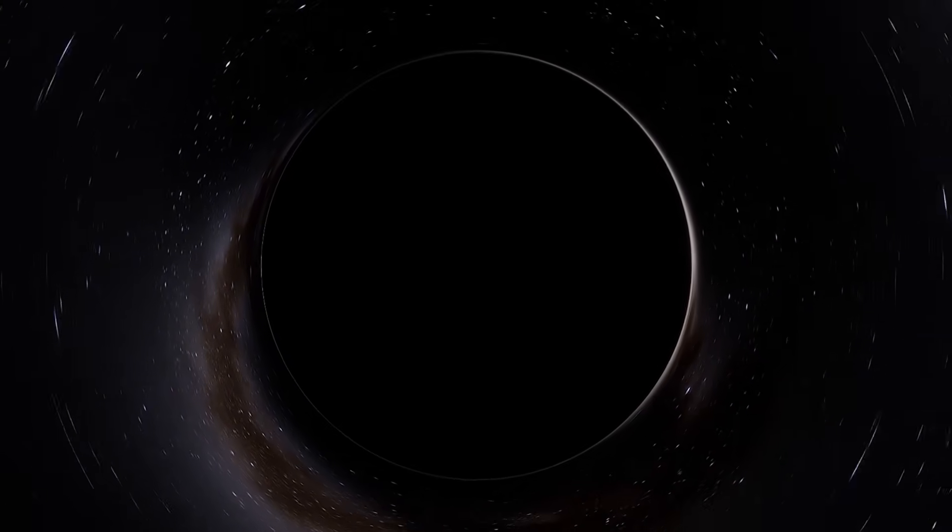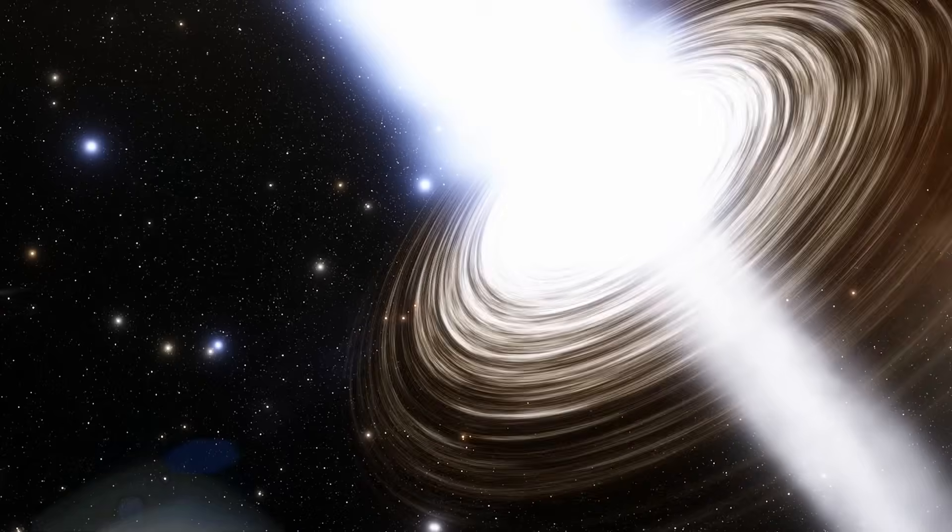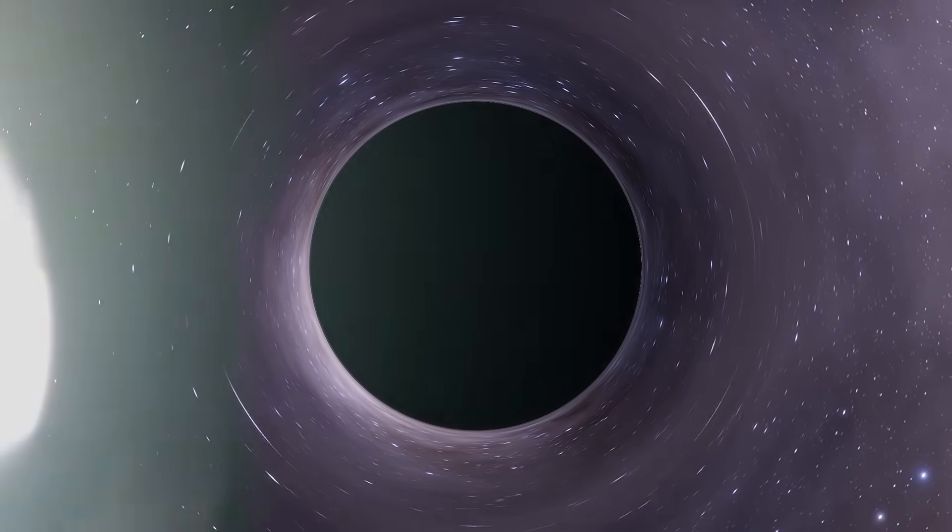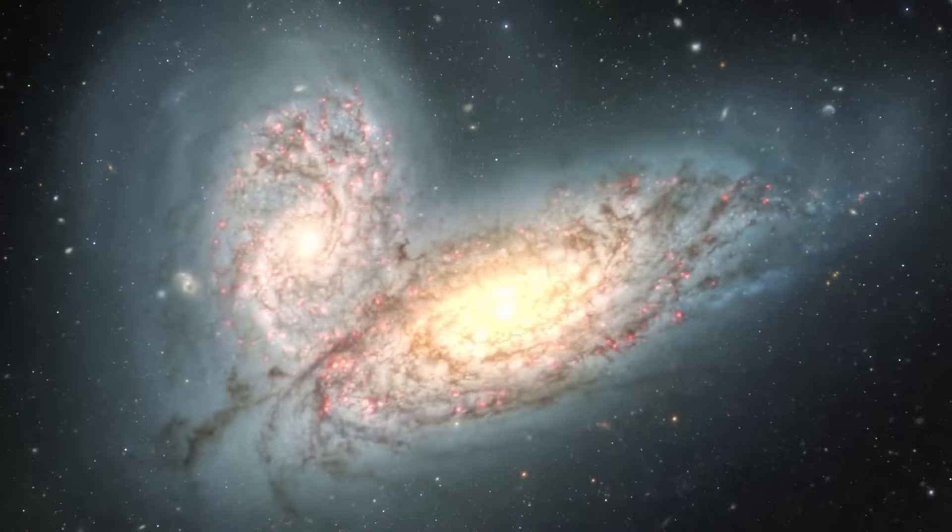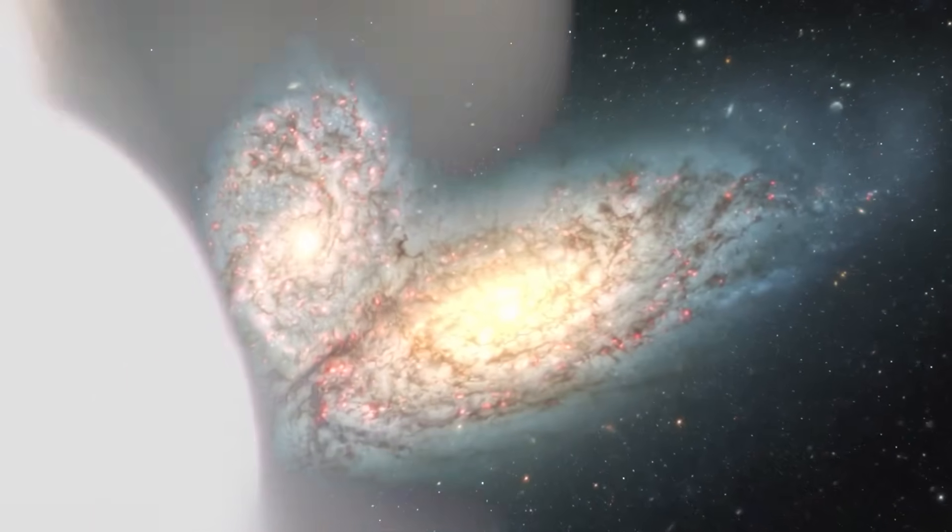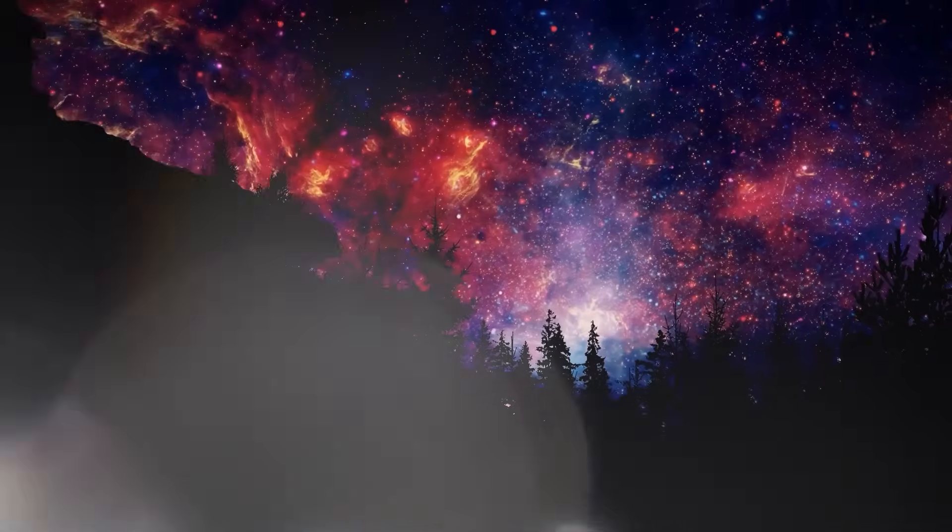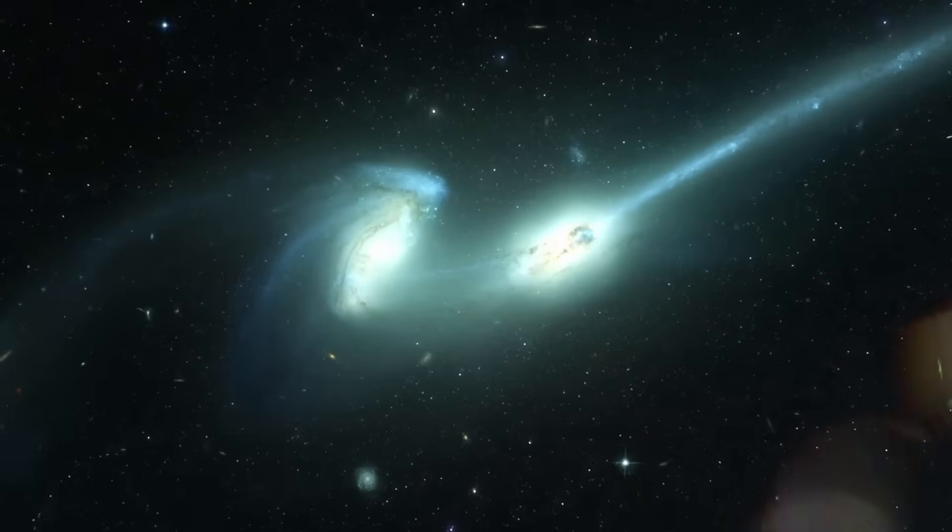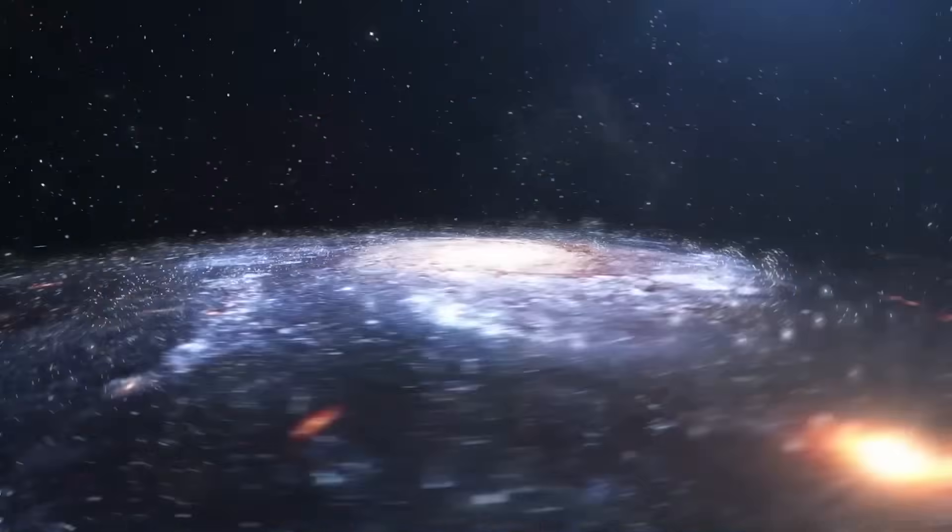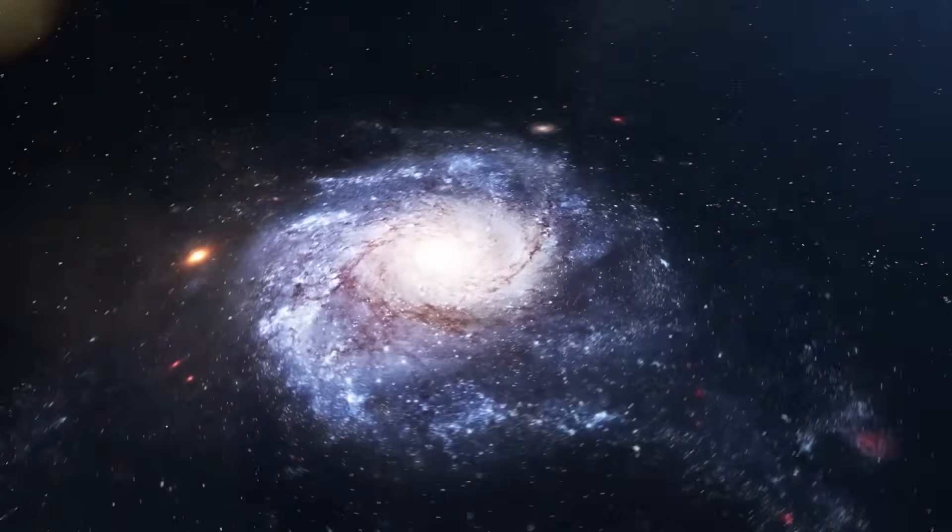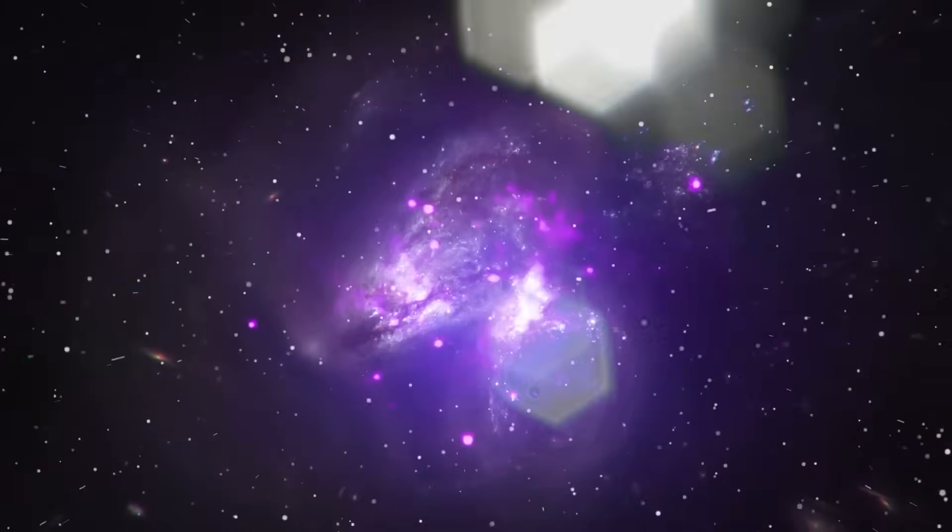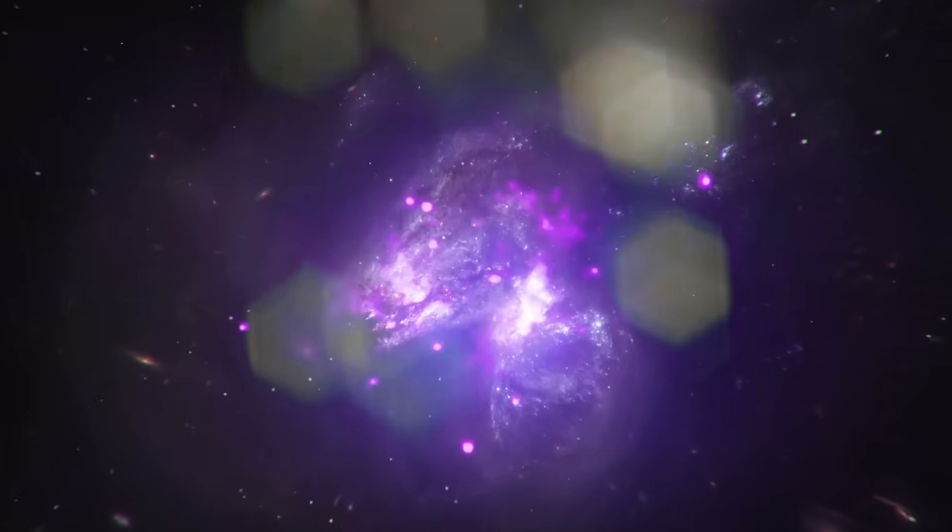One of the most unnerving implications of Webb's discoveries is that time, the most taken for granted dimension of our universe, may not be uniform. The galaxies Webb observes don't just appear too massive or too bright, they seem to evolve faster. In some cases, their stellar populations appear to be older than the universe itself was at that point in history. That's not just a red flag, that's a cosmic alarm bell.